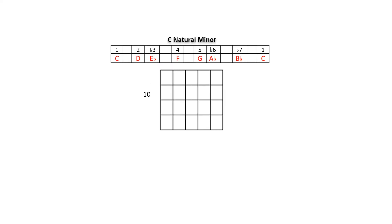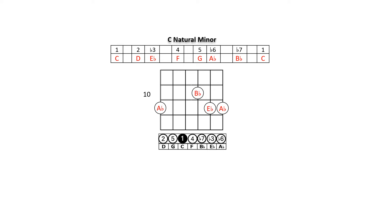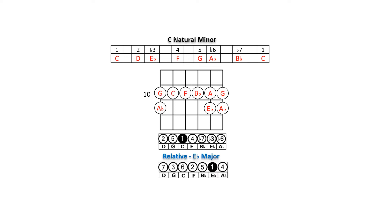Let's find the flats in the C minor scale. Two whole steps, or a major third, down from C is A flat. Counting in fifths, we derive the three flats in C minor, which appear immediately at the beginning of our note pattern. E flat, the second in our order of flat fifths, is the root of the relative major scale.